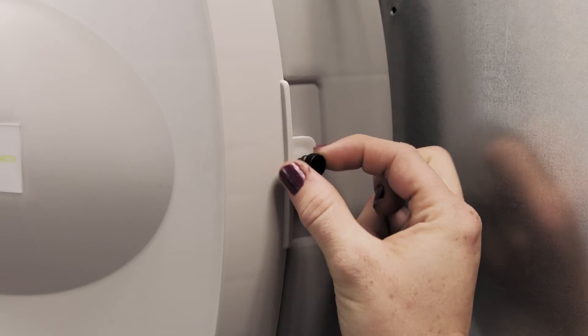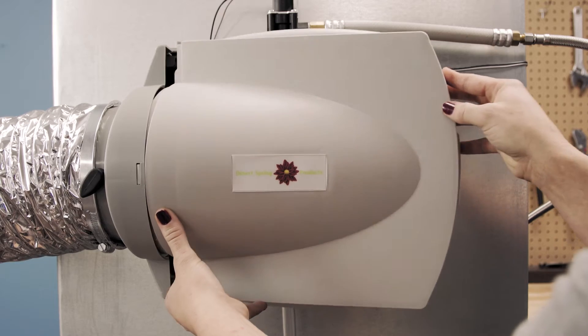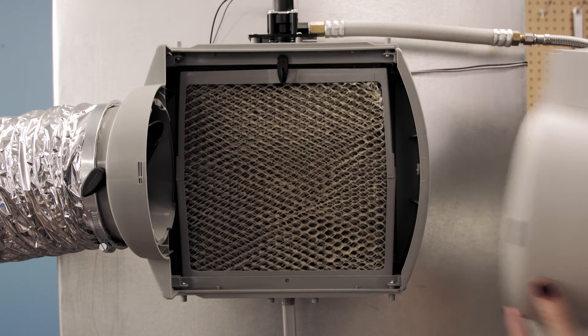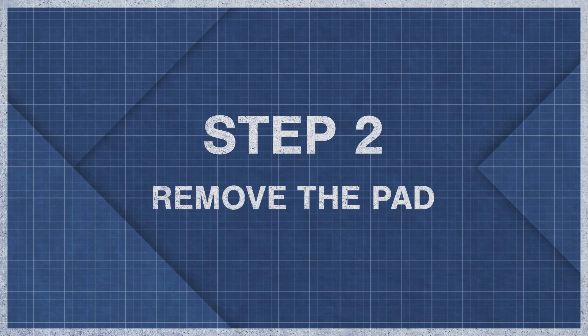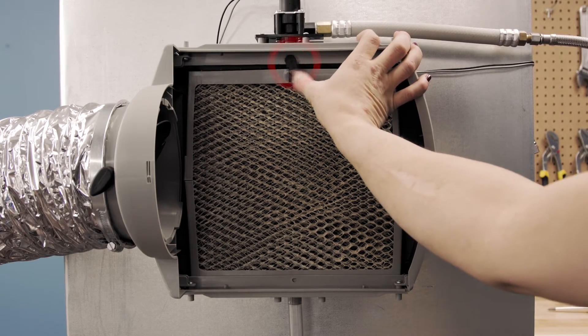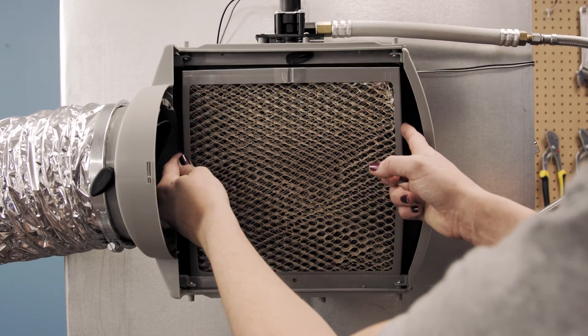Now remove the thumb screw and then pull off the humidifier cover. Swivel the retaining tab up. Now remove the evaporator pad.